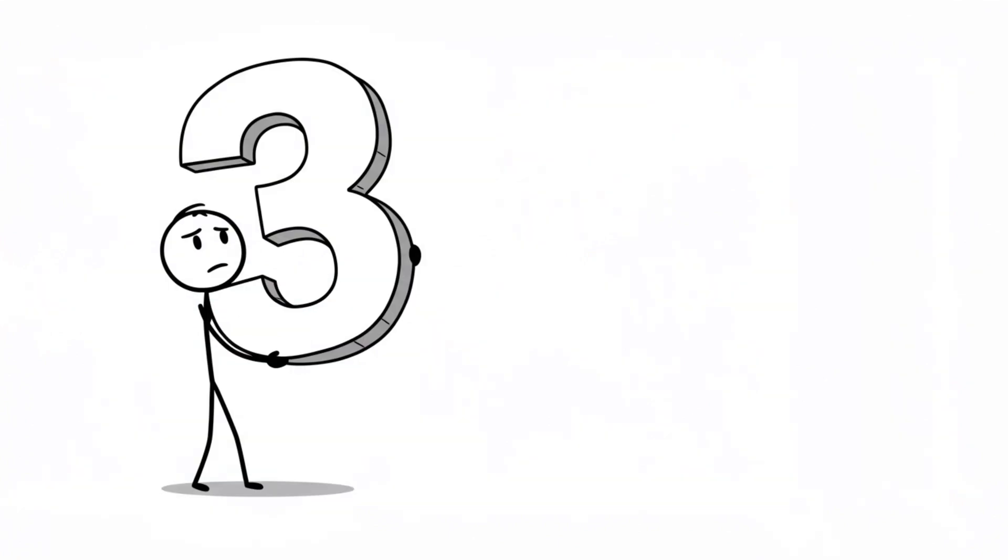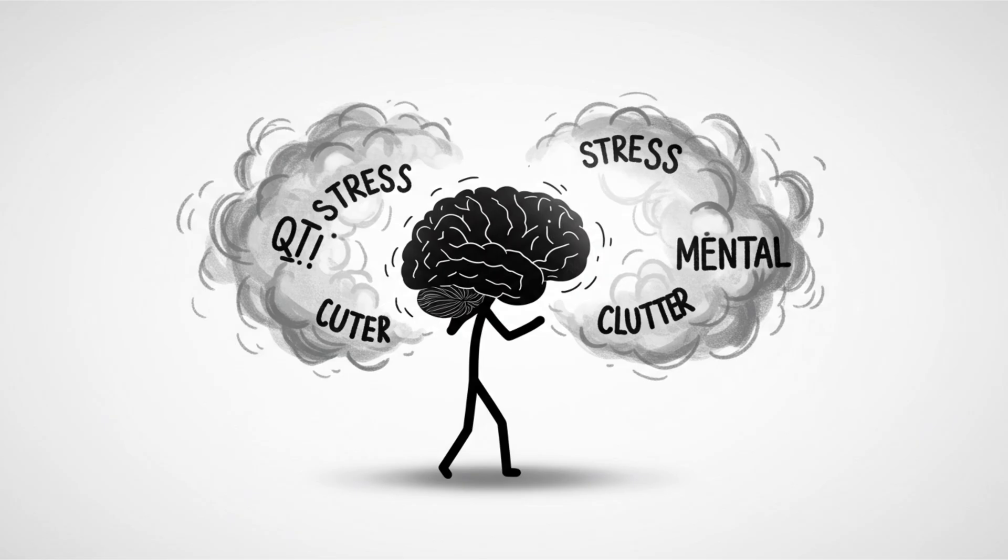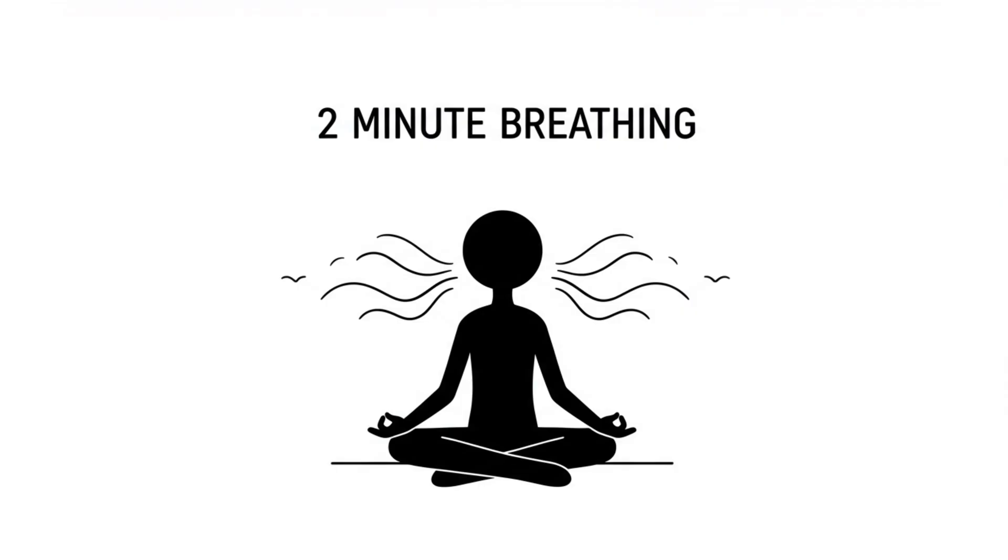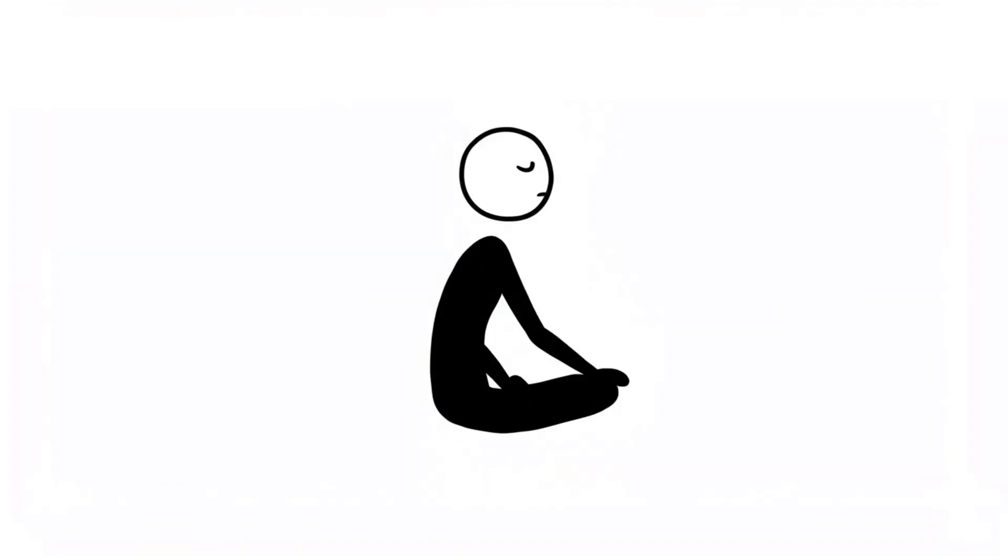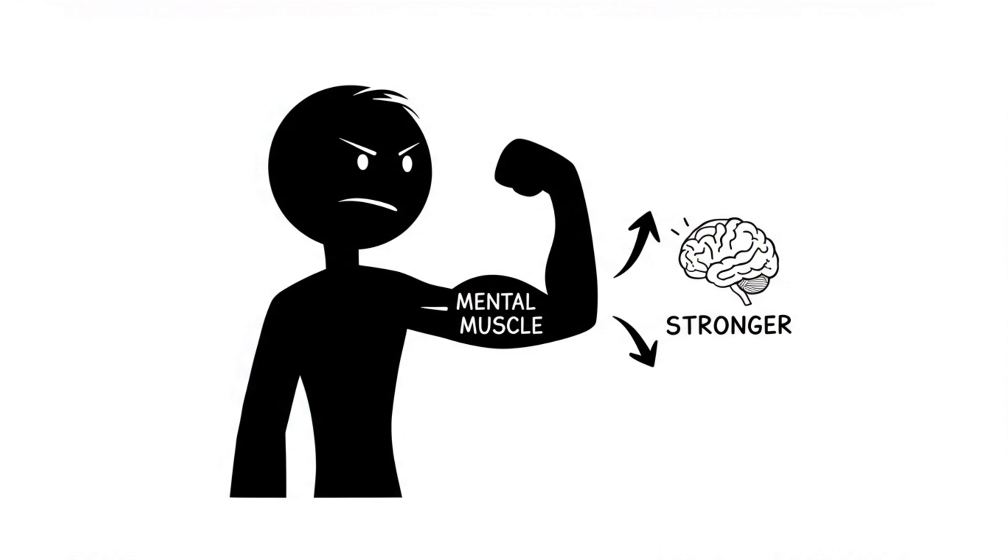Hack number three, focused mindfulness, two-minute reset. Procrastination feeds on stress and mental clutter. Kill both with a two-minute breathing drill. Sit still, close your eyes. Inhale deeply through your nose. Exhale slowly through your mouth. If your mind wanders, gently return to your breath. This tiny practice builds the mental muscle you need to stay on task longer.